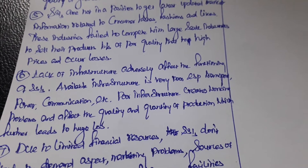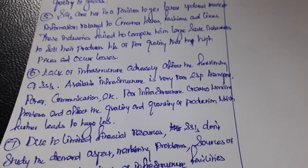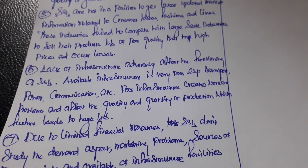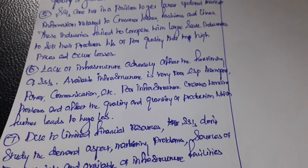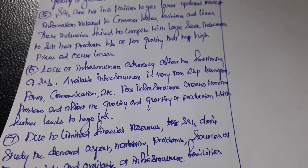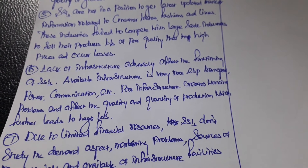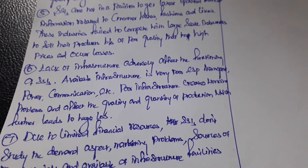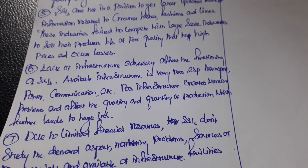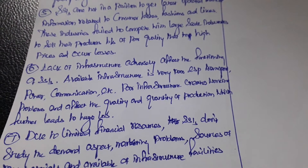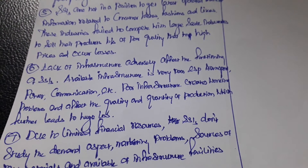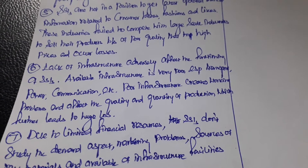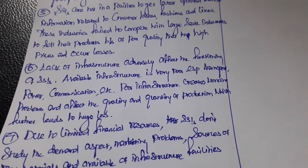Lack of infrastructure adversely affects the functioning of SSIs. Available infrastructure is very poor, especially transport, power, and communication. Poor infrastructure creates working problems and affects the quality and quantity of production, which further leads to huge losses.